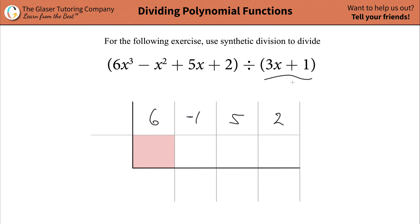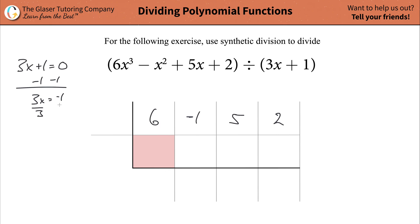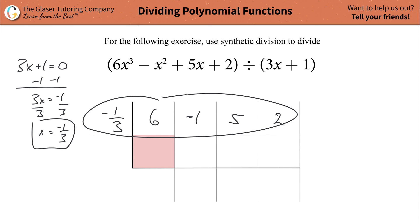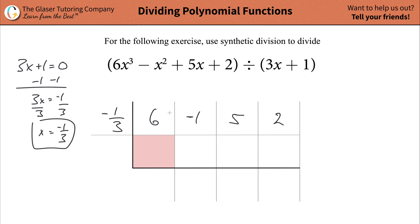Now you're going to look at your divisor. All you're going to do is take that divisor — 3x plus 1 — set it equal to 0, and solve for x. What this will do is tell you what the value should be in the first place outside the box. In other words, this value of negative one third gets plugged in here in the table. Once you have this first row fully filled out, you're ready to begin the procedure.